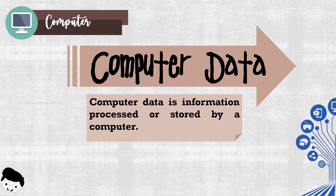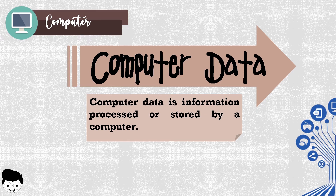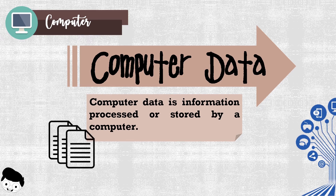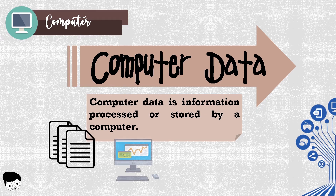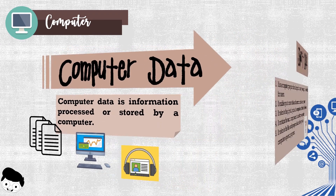And we have computer data. Computer data is information processed or stored by a computer. This information may be in the form of text documents, images, audio clips, software programs, or other types of data.